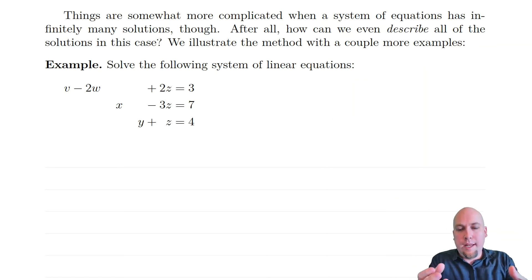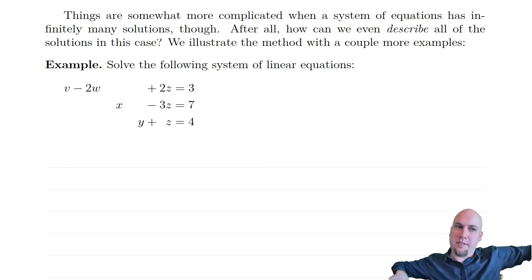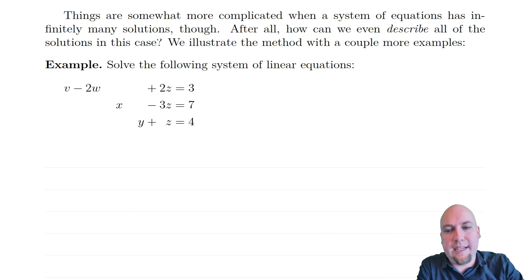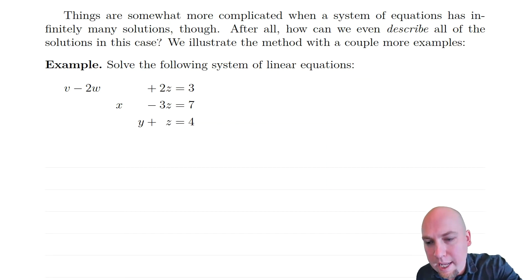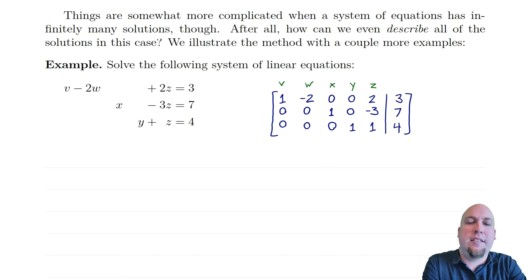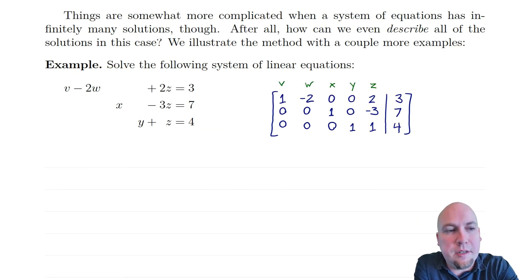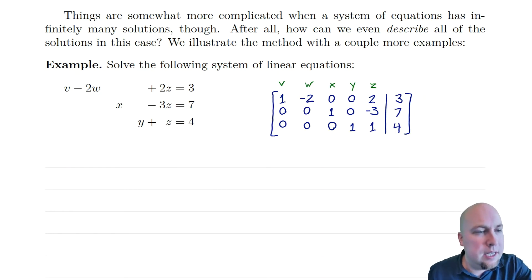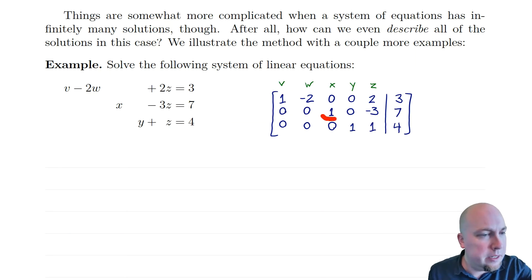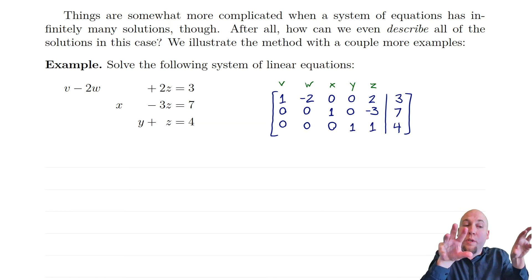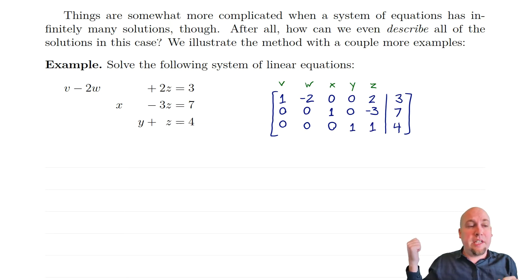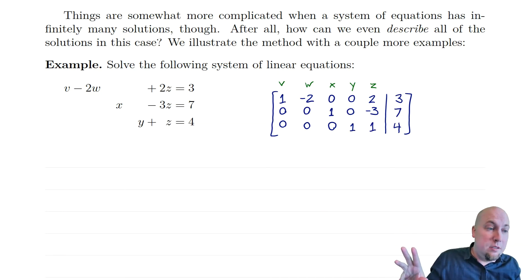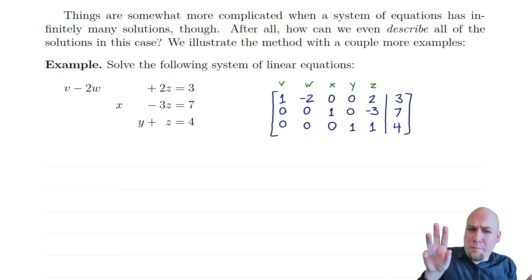Let's go through an example to see how to do this. We'll focus first on the describing part, and then the actual solving part in our next example. So: how do you describe all the solutions? Let's look at this linear system. When you throw it into an augmented matrix, it's actually already in reduced row echelon form — here's a leading entry of one with zeros everywhere else in that column, here's the next leading entry of one with zeros elsewhere, and here's another leading entry of one with zeros elsewhere. I claimed in the previous video that when you have reduced row echelon form you can just read off the solution without any more work.